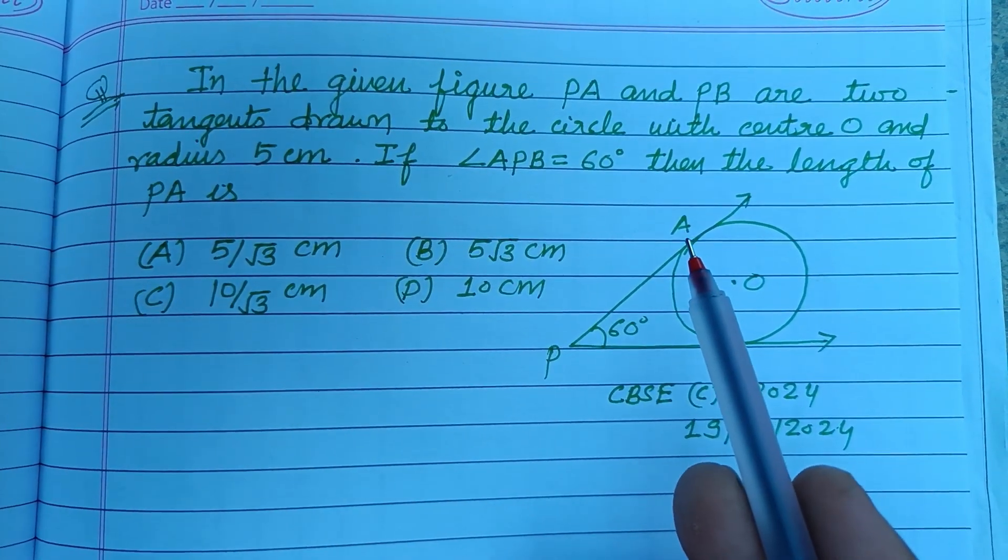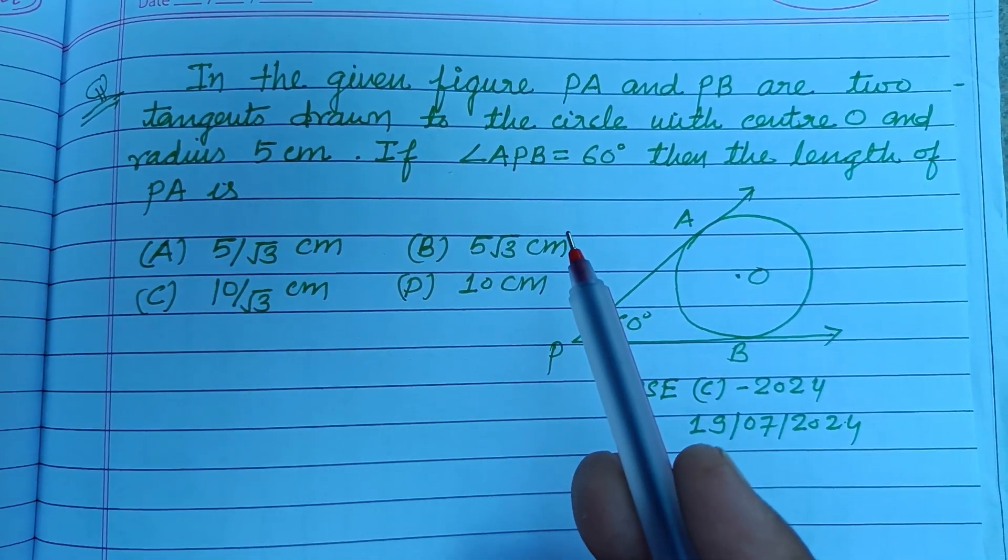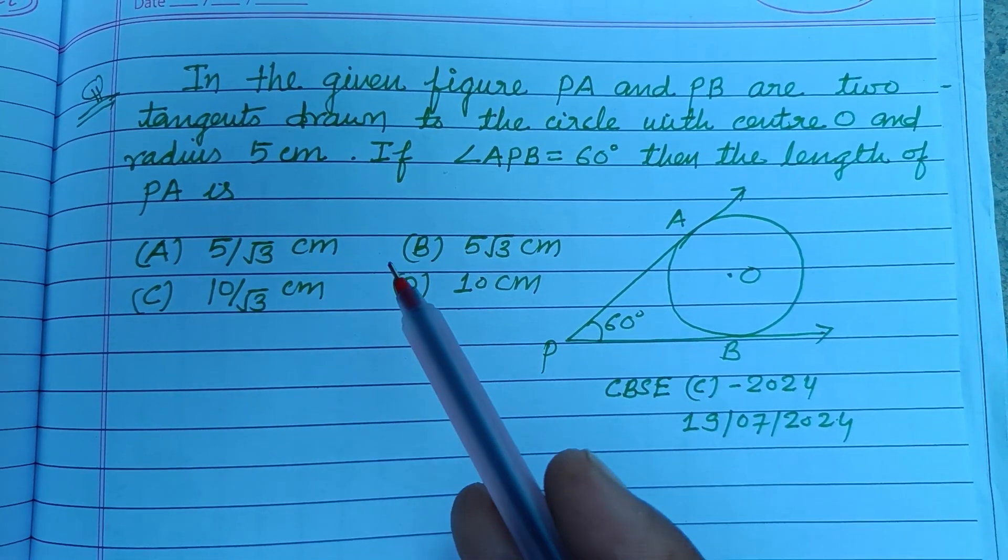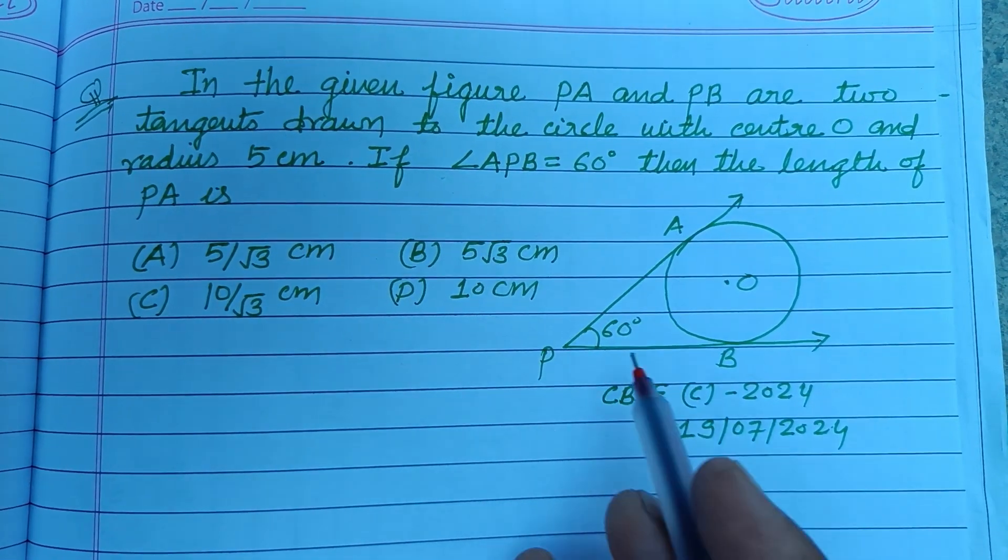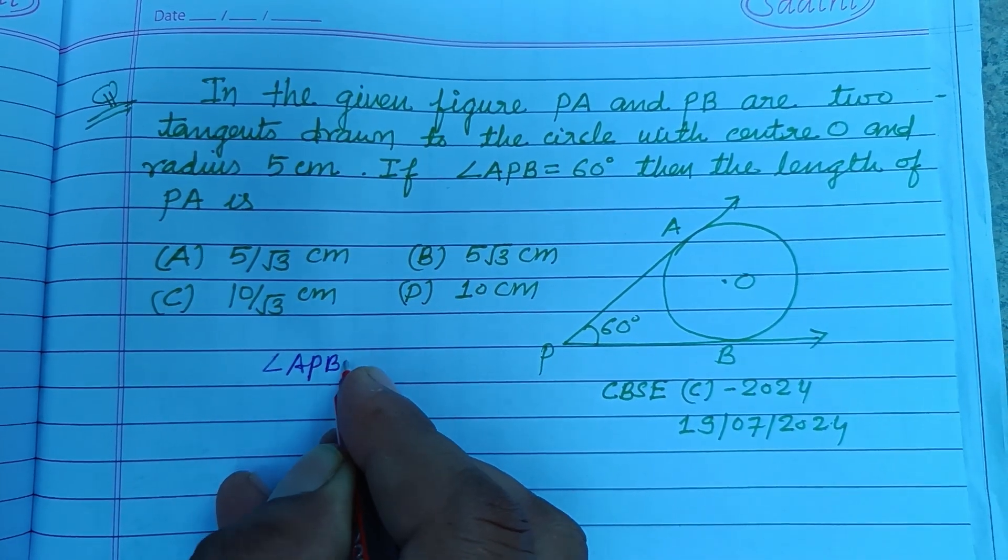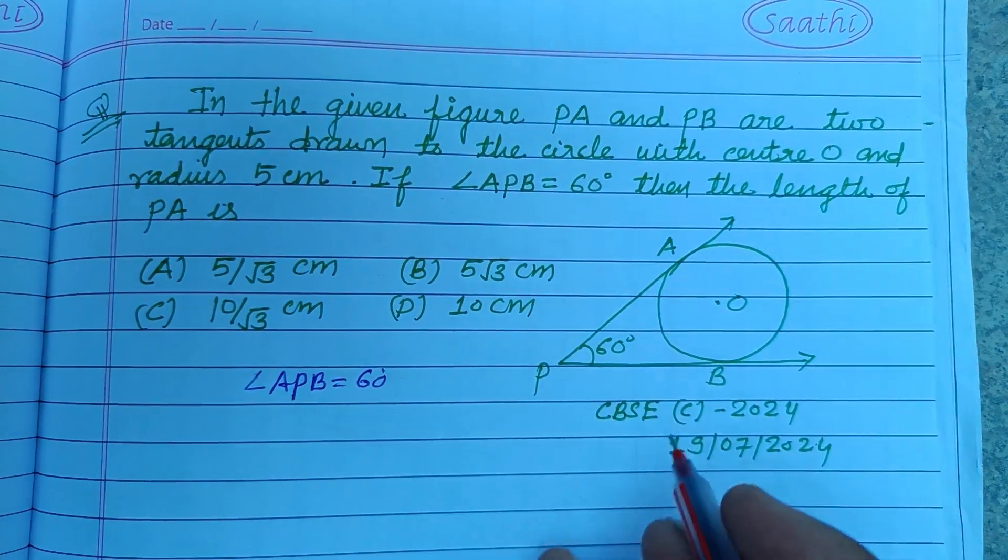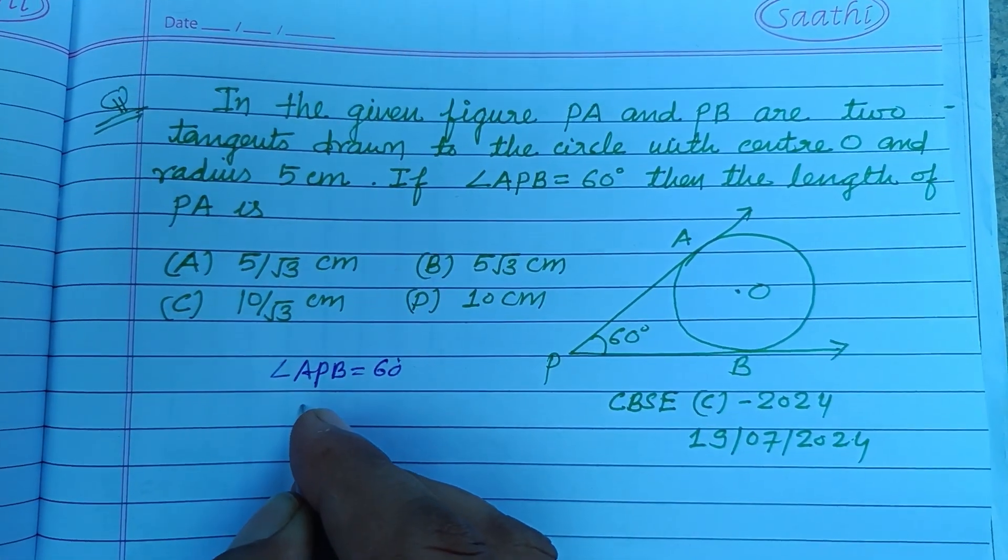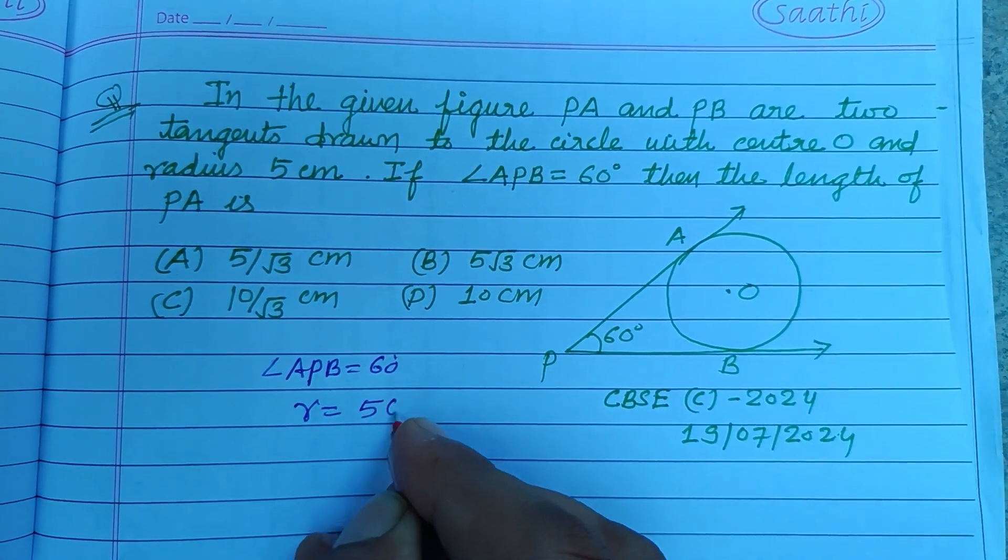In the given figure PA and PB are two tangents drawn to the circle with center O and radius 5 cm. If angle APB is 60 degrees, and radius is given to us as 5 cm.